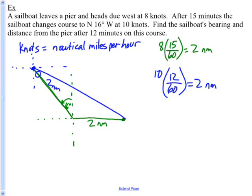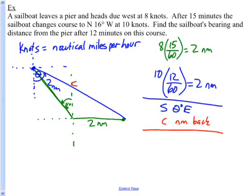I'm going to call this theta. So I'm going to say that's south such and such degrees east. That's what I'm looking for. What's my bearing back to the pier? I changed that problem. And then how many miles is this as well? What's the distance back? Let's call this little c here. C distance. How many c nautical miles back? So those are the two things we're looking for here.